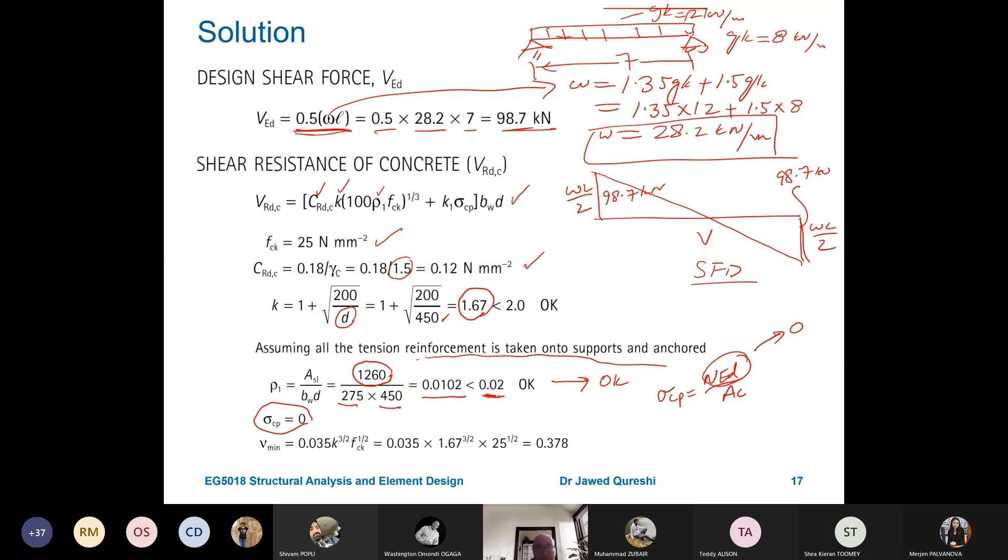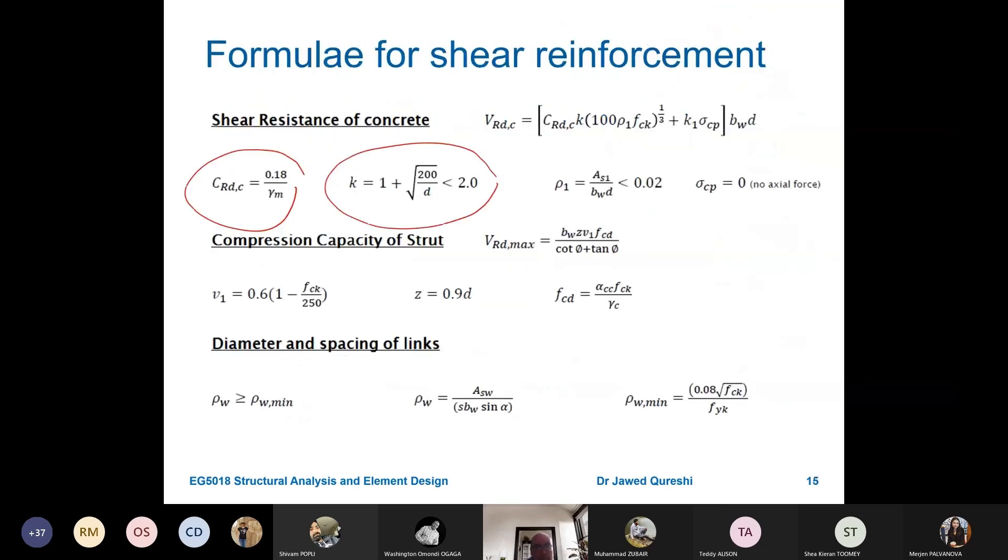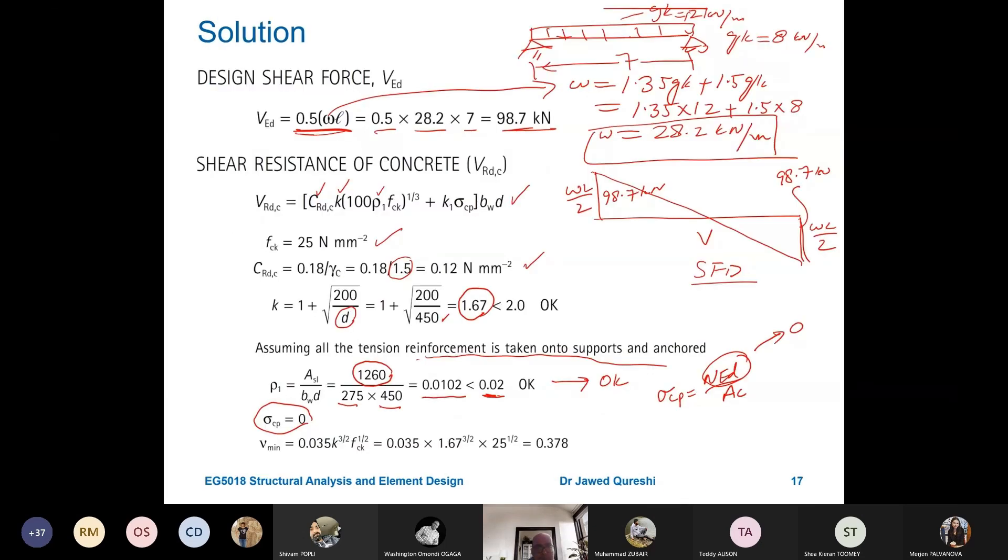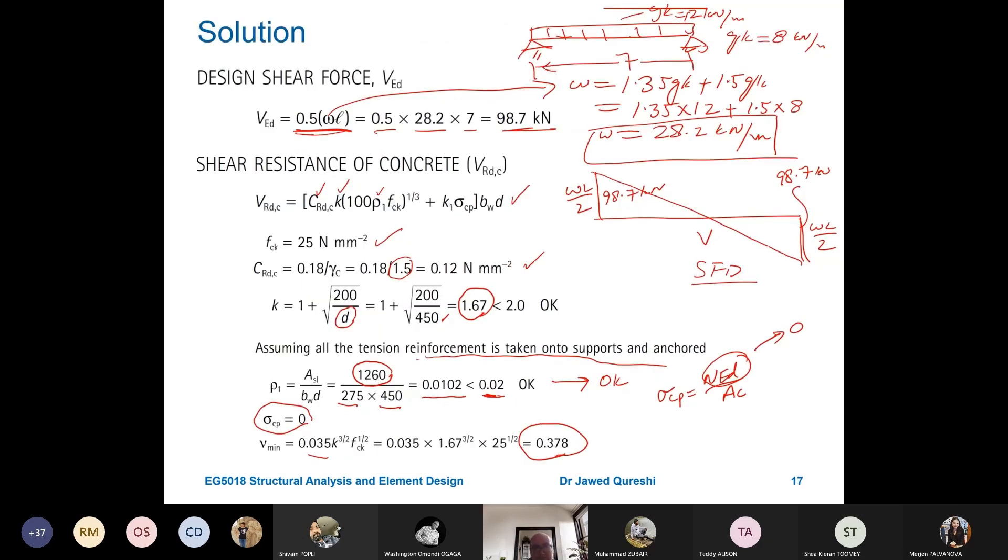And Sigma CP is 0 because there is no axial load. Sigma CP is equal to NED over AC where NED is axial load, which is zero. It means that Sigma CP is going to be zero. And then I have to determine V min as well. I have to check the minimum as well. So, V min is going to be used with the minimum value. Value of V min, when you put these values, it becomes 0.38. V C are the minimum. We will use this minimum a little later.